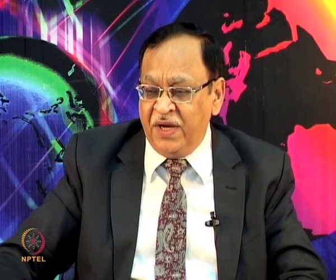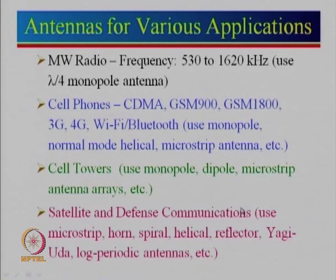For cell phones to communicate we need cell towers — India has roughly 5 lakh cell towers — using monopole, dipole, microstrip antenna arrays, etc. A monopole antenna is used when omnidirectional coverage is required, but mostly coverage is sectoral, covering 90 or 120 degree sectors. On one rooftop you often see three antennas, each covering 120 degrees, giving 360 degrees total coverage.